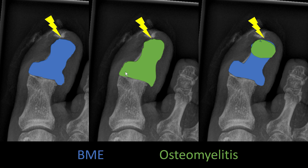In long-standing disease you might get a complete infection of the whole bone — an osteomyelitis of the whole bone like in this case where everything is affected. The most common scenario will be something like this: you have the ulcer, a reactive bone marrow edema which is very extensive and reaching far into the bone, and then you have an area of osteomyelitis.